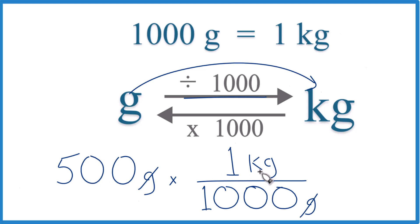500 times 1 kilogram, 500 kilograms divided by 1,000. You get 0.5 kilograms, just like we did before.